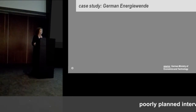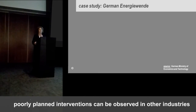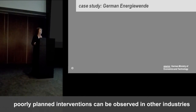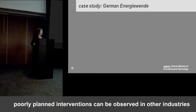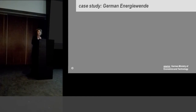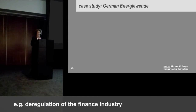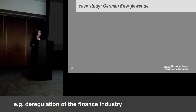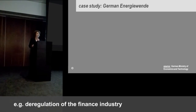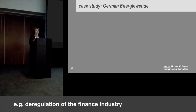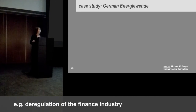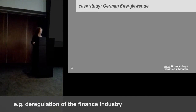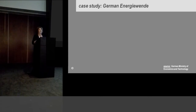Similar poorly planned government interventions can also be observed in other industries. An example is the deregulation of the finance industry in the 1990s, which led to a major financial crisis and the various bailouts of the banking sector. And more recently, we have partial re-regulation of the industry, whereby it is questionable whether it is thoroughly enough planned.